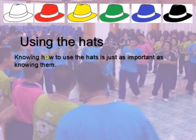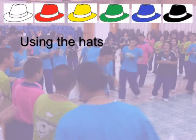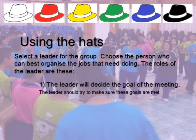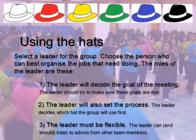Now, using the hats — knowing how to use them is just as important as knowing what they are. Everyone in the group must help the thought process move forward, and it's helpful to have a leader to control that process. The best organiser should be the leader. Their roles are to decide the goal of the meeting, set the process — for example, which hat the group will use first — and be flexible, listening to advice from other team members while having responsibility for the final decision.